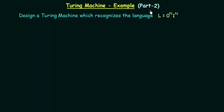In this lecture, we will be seeing another example of a Turing machine where we will see how to design a Turing machine for a given language. Our task is to design a Turing machine which recognizes the language L equal to 0^n 1^n. That means we have to design a Turing machine which accepts strings where the number of zeros should be exactly equal to the number of ones that follow.